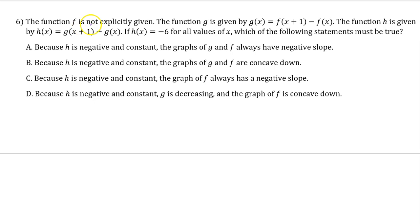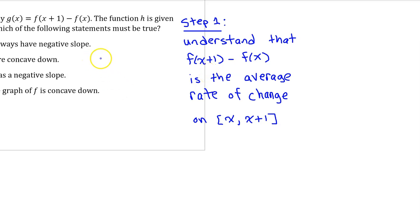Number 6. The function f is not explicitly given. The function g is given by g of x equals f(x plus 1) minus f(x). The function h is given by h of x equals g(x plus 1) minus g(x). If h of x equals negative 6 for all values of x, which of the following statements must be true? The first step is understanding that f(x plus 1) minus f(x) is the average rate of change on the interval from x to x plus 1.